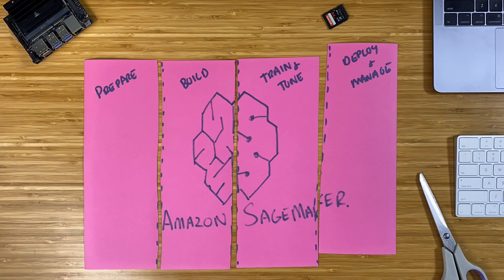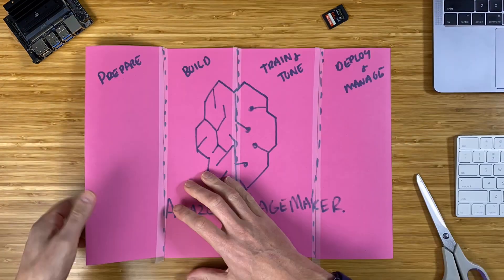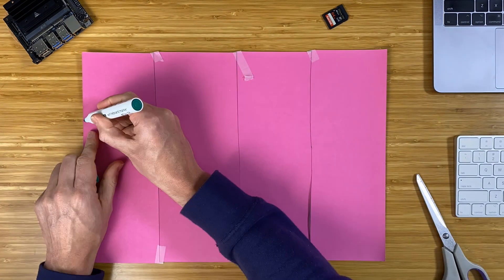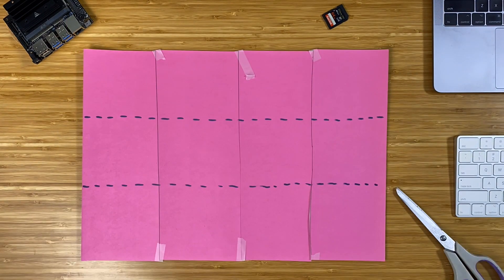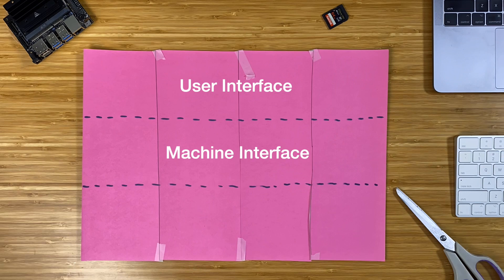Each of those sections has so many levels you can dig down into. Rather than slicing it vertically into different things it can do, let's also look at it sliced horizontally into three layers. At the top, we'll look at the different user interfaces into SageMaker. In the middle, we'll look at the machine interfaces into SageMaker. And at the bottom, we'll talk about the infrastructure that SageMaker has in place.